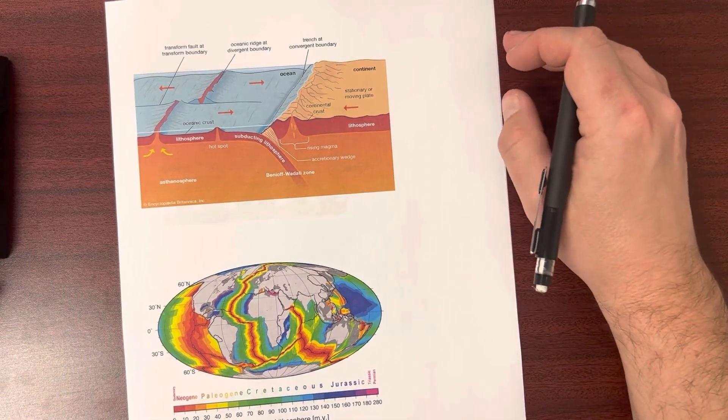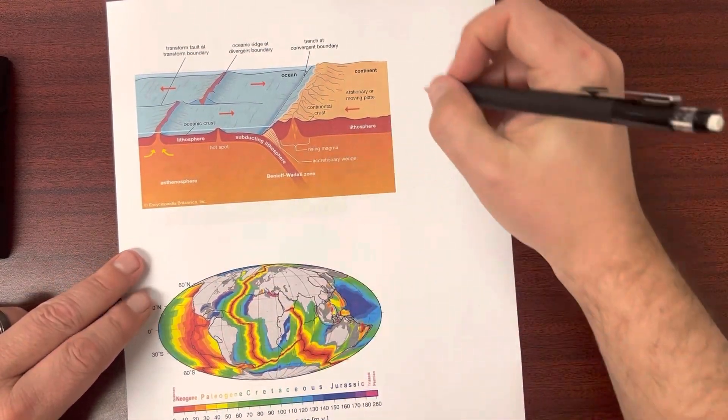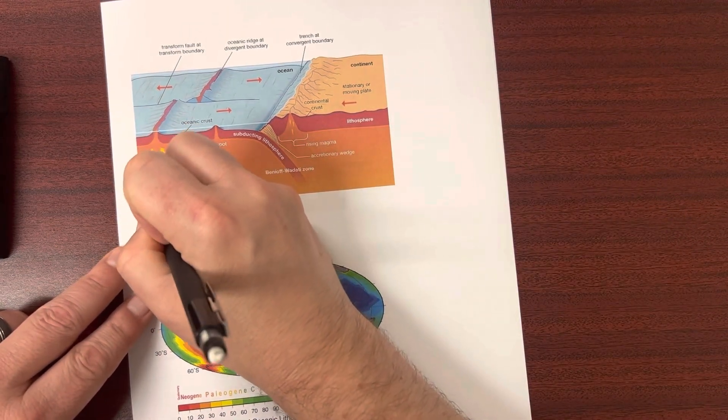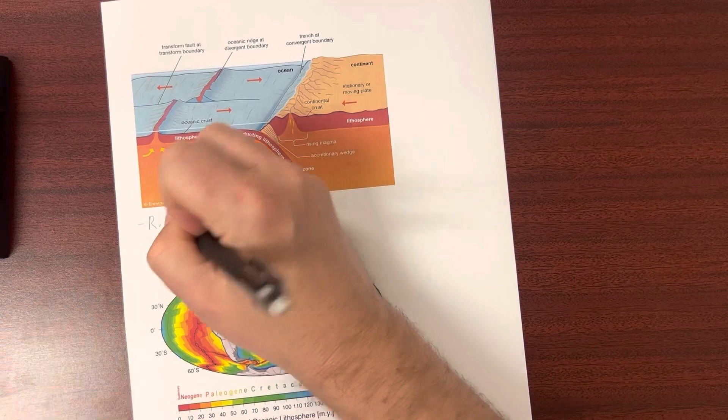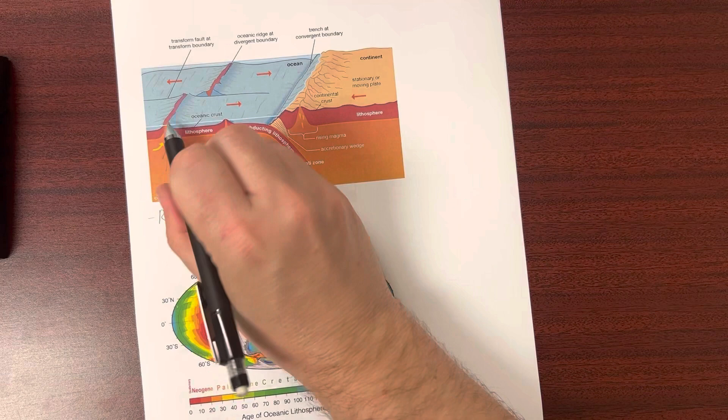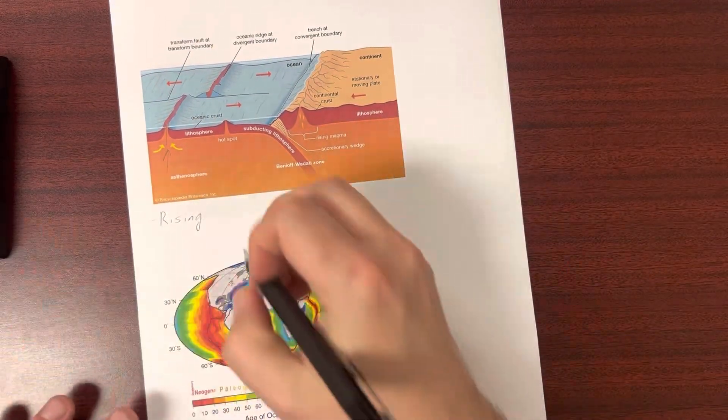And what we started to learn was that these mountain ranges under the water were caused by a couple of geologic processes. First of all, we have magma that's rising up from the core, breaking through the crust of the earth, so the hard surface of the earth.